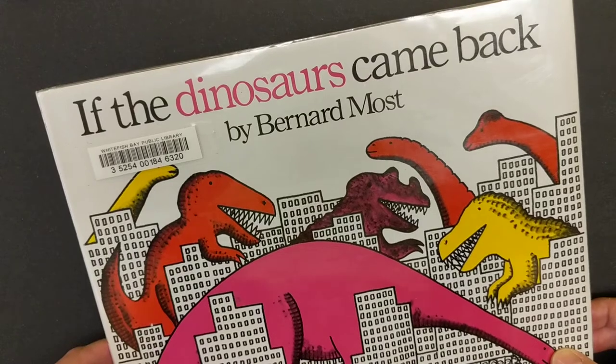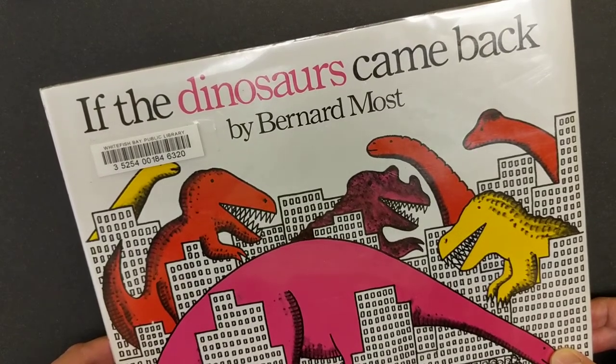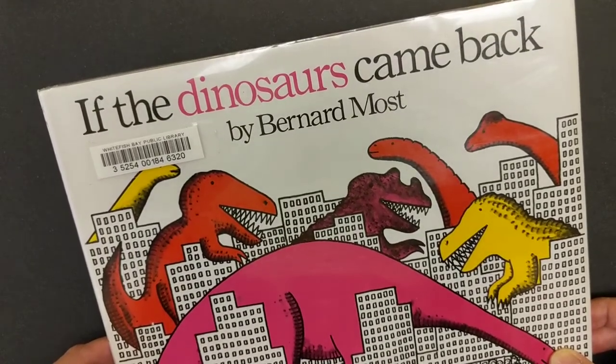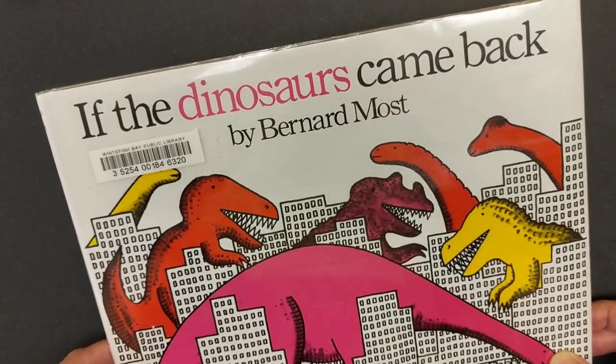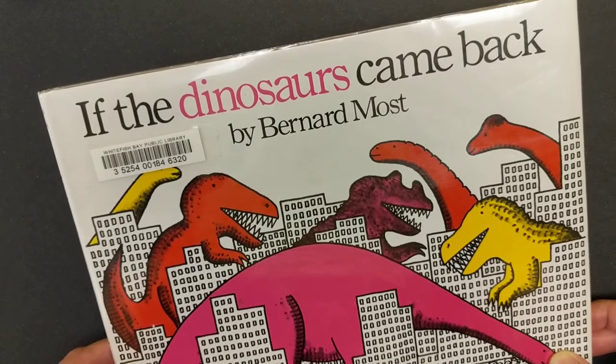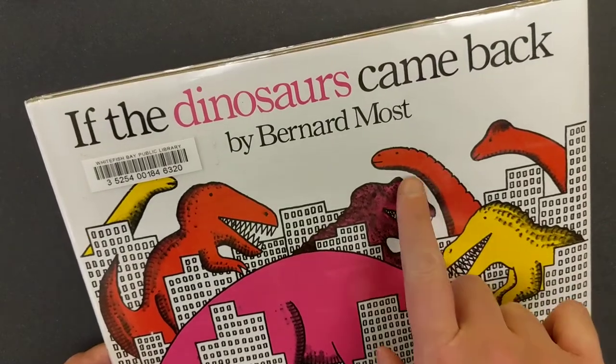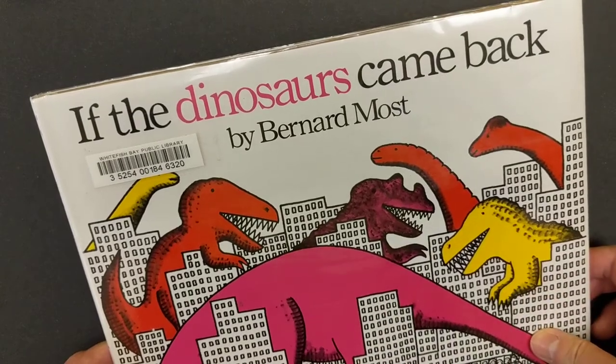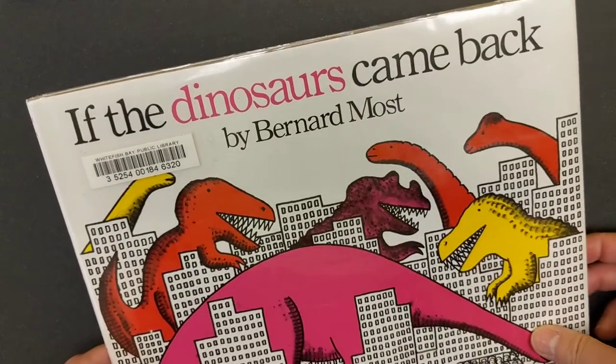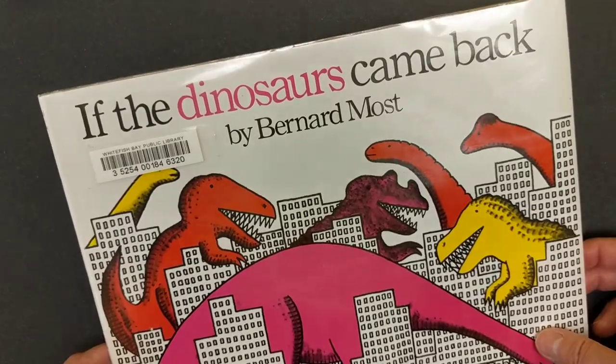So for this project you will need one to two pieces of plain white paper, a black marker—a Sharpie is great, but just a thin tip black marker will work as well—some colorful paper so that you can make your own dinosaur, and then we'll also need a pair of scissors and a glue stick. All right, let's get started.